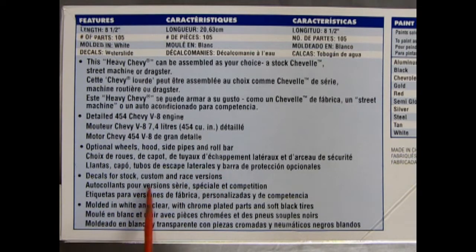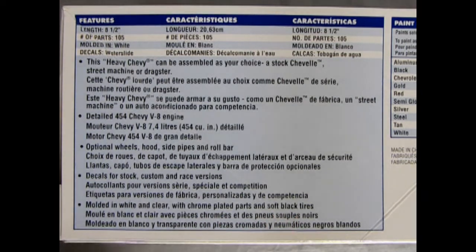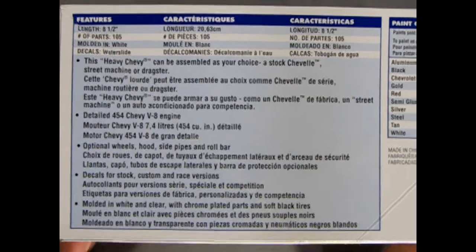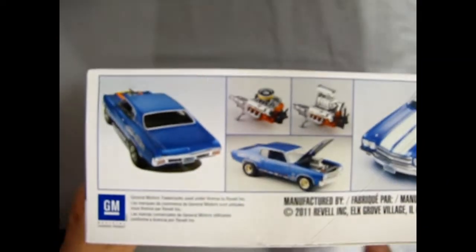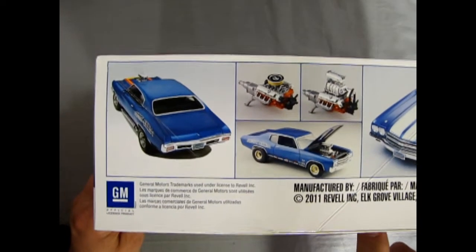Decals for stock, custom and race version. Molded in white and clear with chrome plated parts and soft black tires. They also give you the paint call out colors that you need in order to finish this model.